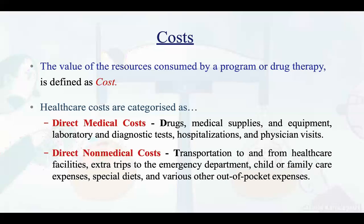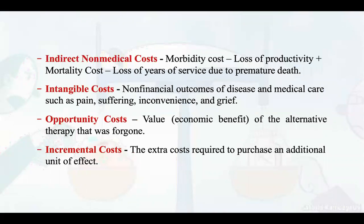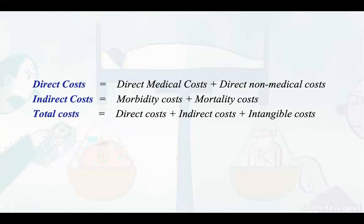For example, if you are visiting a hospital like JPMC and living outside the city, the transfer charges, food, and residence are non-medical costs. Indirect costs include morbidity costs — loss of productivity — and mortality costs — loss of years of service due to premature death. Intangible costs are non-financial outcomes such as pain, suffering, inconvenience, and grief. Opportunity cost is the value of an alternative therapy foregone, and incremental cost is the extra cost required to purchase an additional unit of effect.